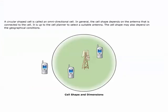A circular shaped cell is called an omnidirectional cell. In general, the cell shape depends on the antenna that is connected to the cell. Some antennas can also focus their power on a certain sector in the circle. This is called a sector cell. It is up to the cell planner to select a suitable antenna. The cell shape may also depend on the geographical conditions.